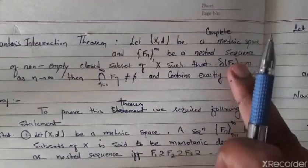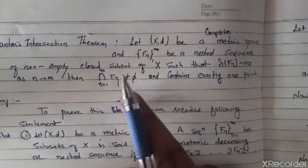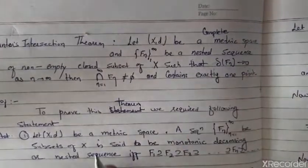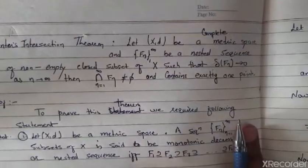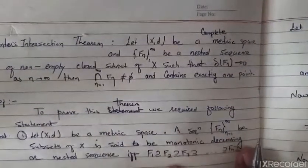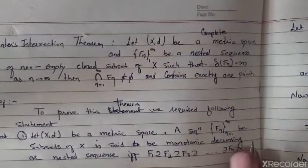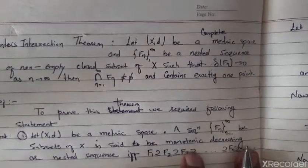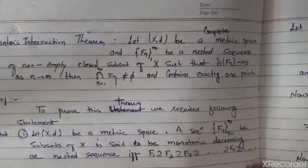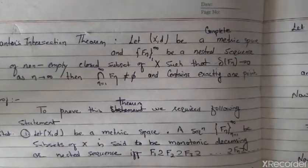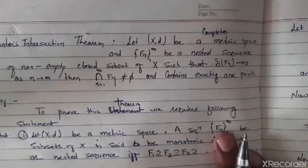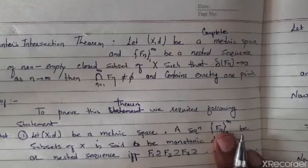Under that condition, the infinite intersection of Fn should always be non-empty, and it should contain exactly one point. To prove this theorem, we require the following: first, it is a nested sequence so F1 ⊇ F2 ⊇ F3 ⊇ ... ⊇ Fn ⊇ Fn+1 and so on. Second, since the space is a complete metric space, every Cauchy sequence is convergent — that is what completeness means.